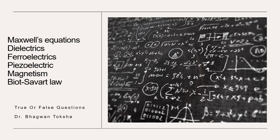An explanation is also provided at the end of each question for better understanding. Maxwell equations are the foundation of electromagnetism, describing how electric and magnetic fields interact. Dielectrics are materials that influence electric fields by insulation or polarizing. Ferroelectrics have unique electrical properties, as well as piezoelectrics. Magnetism is a phenomenon of materials being attracted or repelled by magnets. So let's get ready to test our knowledge on these topics — grab a notepad and pen, or simply play along in your head. Let's start!